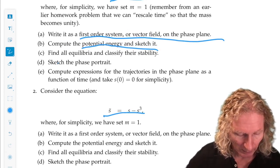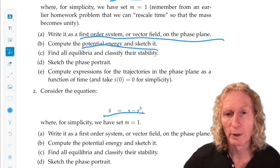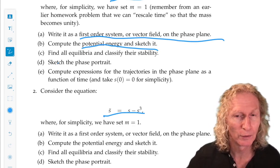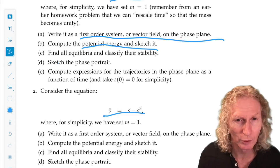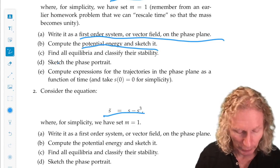And that's what you need for part C. Find all the equilibria for the equations and classify their stability. And you can do that in terms of the critical points of the potential energy function.